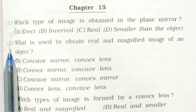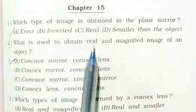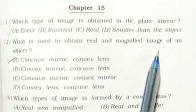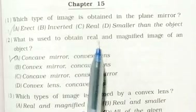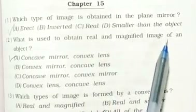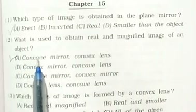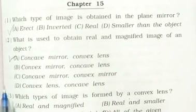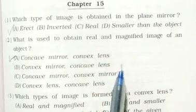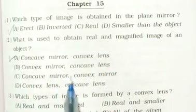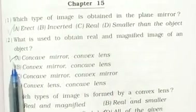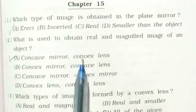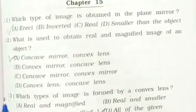Question 2: What is used to obtain a real and magnified image of an object? Options: A) concave mirror and convex lens, B) convex mirror and concave lens, C) concave mirror and concave mirror, D) convex lens and concave lens. The right answer is A) concave mirror and convex lens.